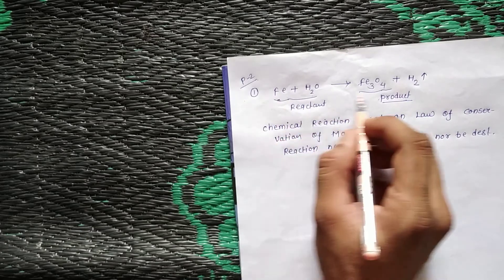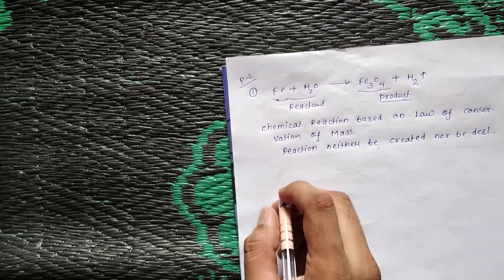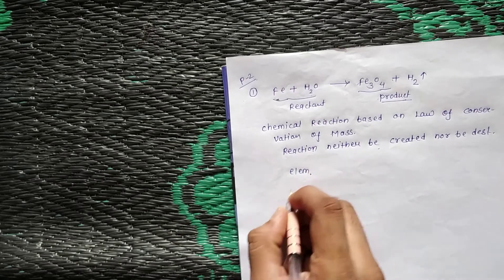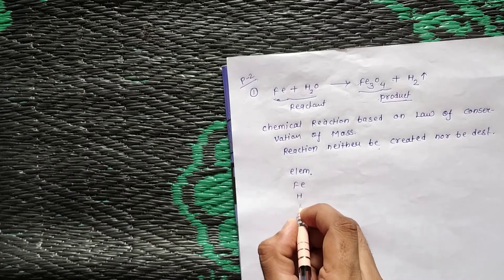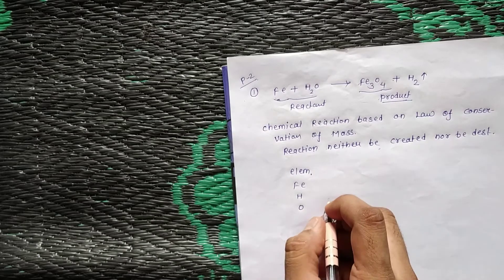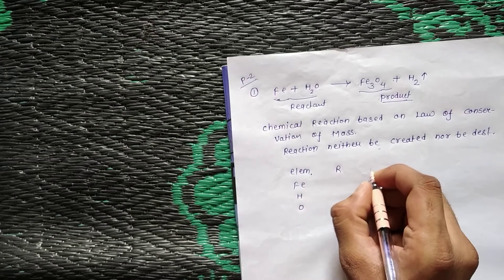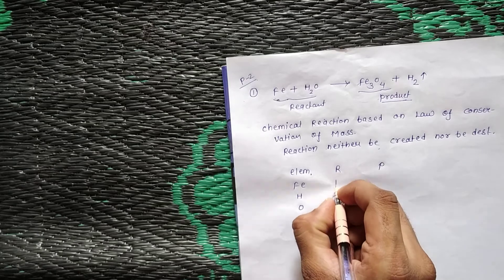Matter can only change from one form to another form. In this chemical reaction, the number of elements are: iron, hydrogen, and oxygen.